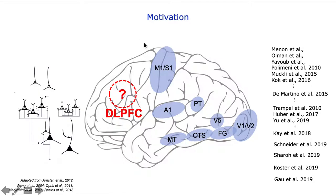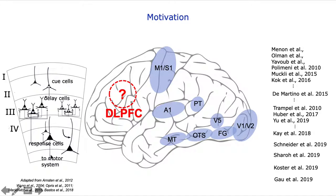We know from the monkey electrophysiological literature that these areas also have functionally specific microcircuitry. There are, for example, cue cells, delay cells, and response cells that eventually trigger the motor output. Each of them are aligned to specific cortical lamina.